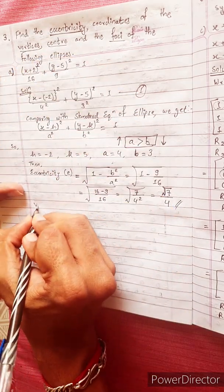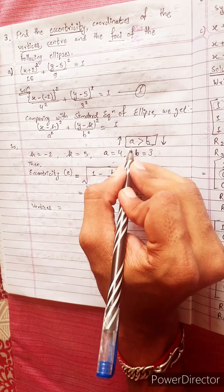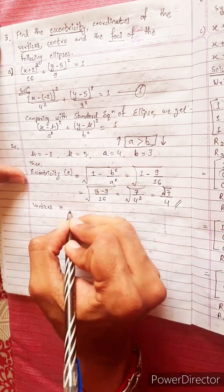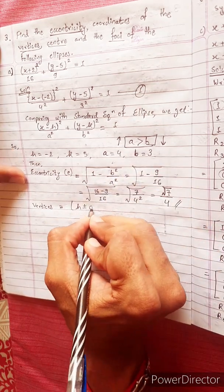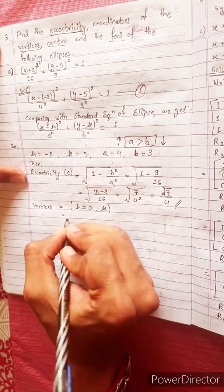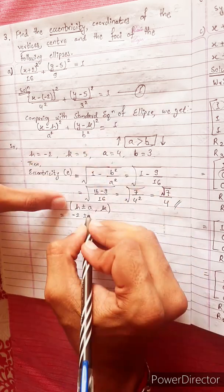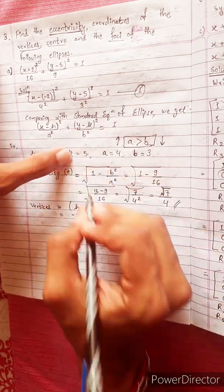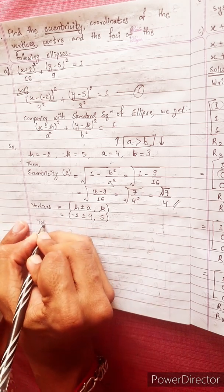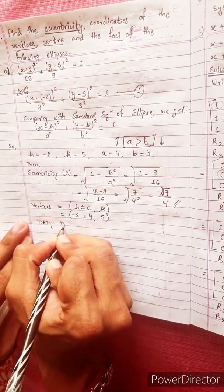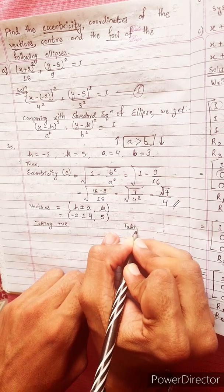Now finding vertices. When a is greater than b, the formula for vertices is x equals h plus minus a, giving: x equals minus 2 plus minus 4, y equals 5. Taking positive and taking negative separately.